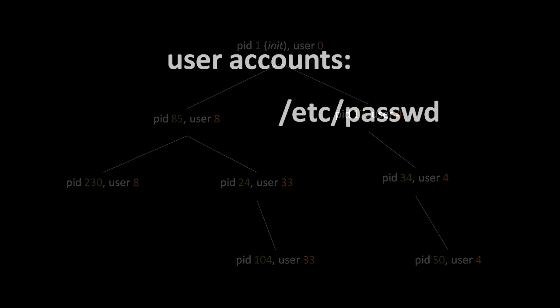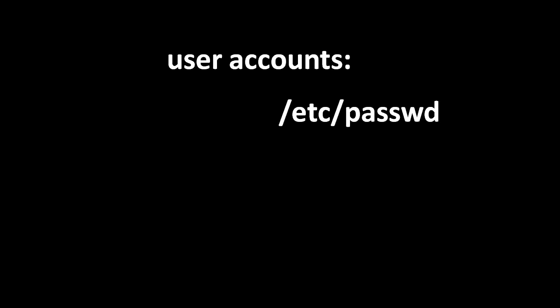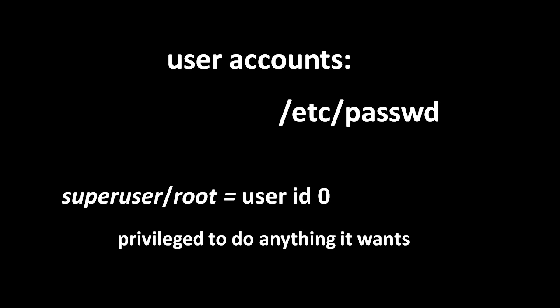In most Unix systems, the accounts on the system are all listed in a file called /etc/passwd. The user account given the ID number zero is a special account called the root user or the super user, and this account is special because it's allowed to do anything it wants. So when a process is running with the privileges of the super user, system calls will never fail for privilege reasons.